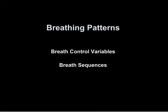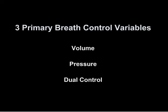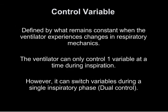There are three primary breath control variables: volume, pressure, and dual control. The control variable is defined by what remains constant when the ventilator experiences changes in the respiratory system. The ventilator can only control one variable at a time during inspiration; however, it can switch variables during a single inspiratory phase.